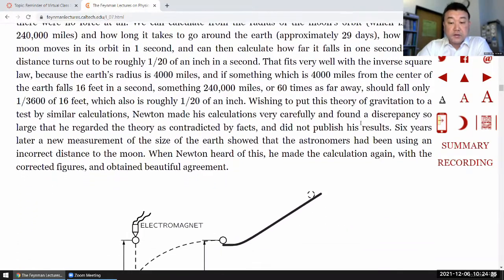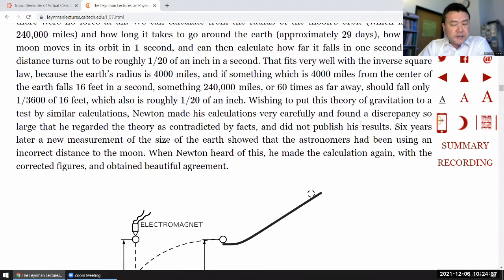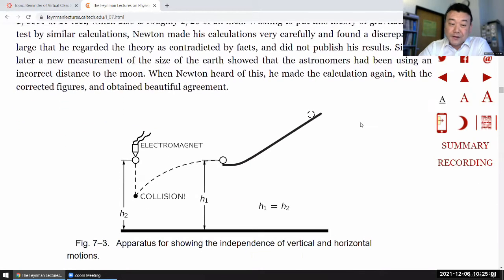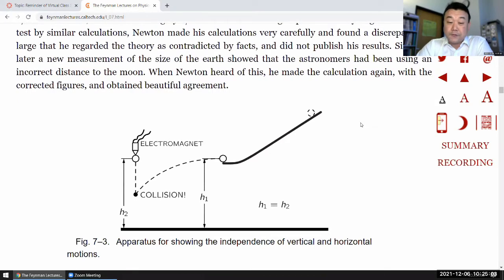Wishing to put this theory of gravitation to a test by similar calculations, Newton made these calculations very carefully and found a discrepancy so large that he regarded the theory as contradicted by fact and did not publish its results. Six years later, a new measurement of the size of the Earth showed that the astronomers had been using an incorrect distance to the Moon. When Newton heard of this, he made a calculation again, with the corrected figures, and obtained a beautiful agreement.